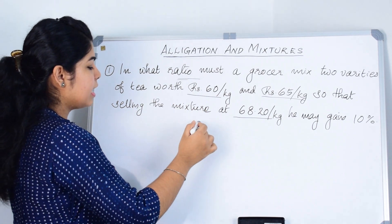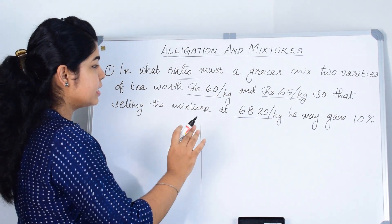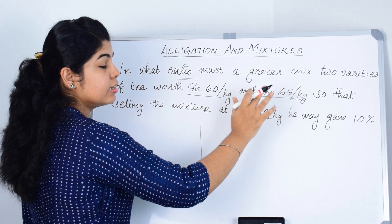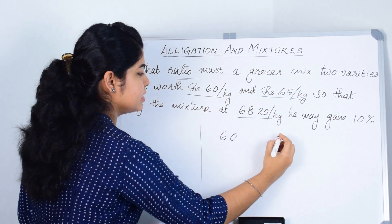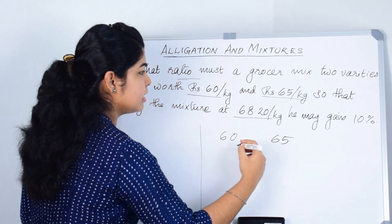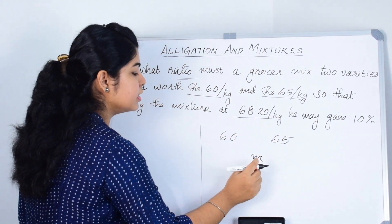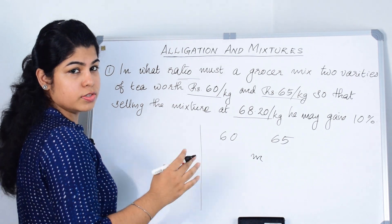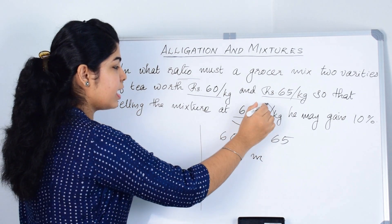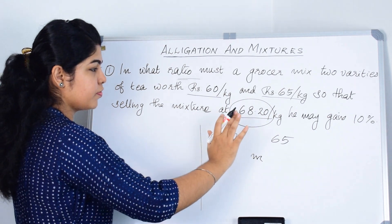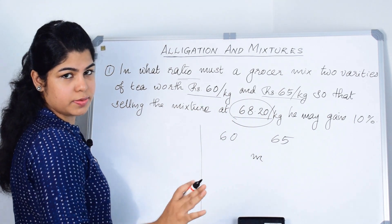First, let us see what details are given in the question. A cheaper price and a dearer price are given. I am writing the cheaper price on the left hand side and the dearer price on the right hand side. We need to write the mean price in the middle. Is the mean price given in the question? No. The given value is the selling price of the mixture. Mean price is always the cost price of the mixture.